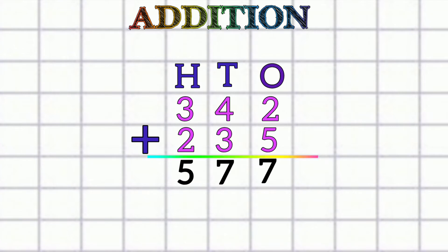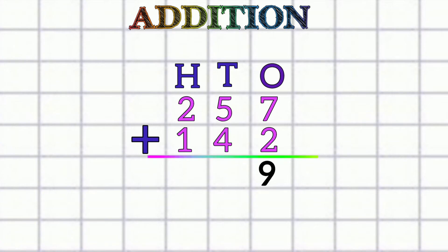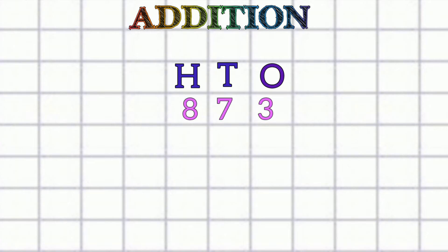Now let's understand another example: 257 plus 142. First the ones place: seven plus two equals nine. Then the tens place: five plus four equals nine. Then the hundreds place: two plus one equals three. So our answer is three hundred ninety-nine.